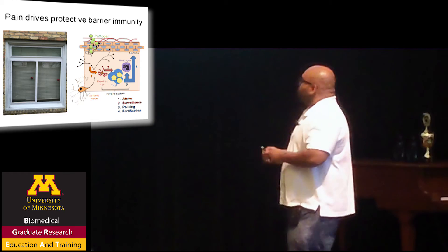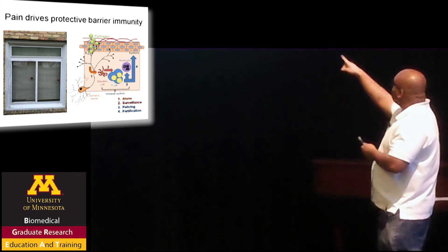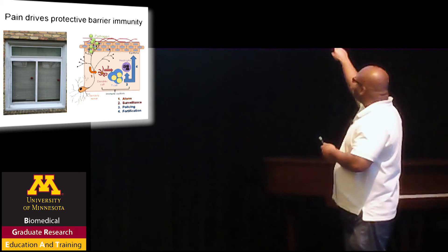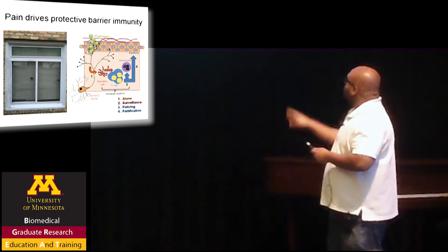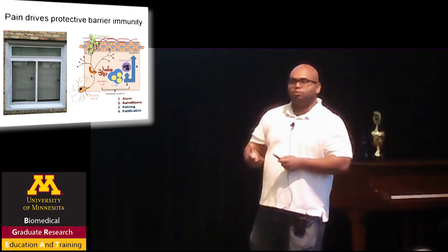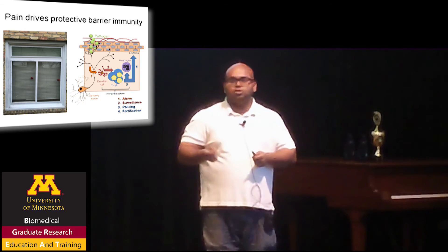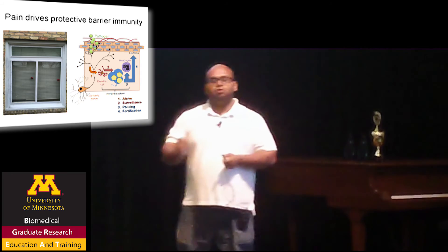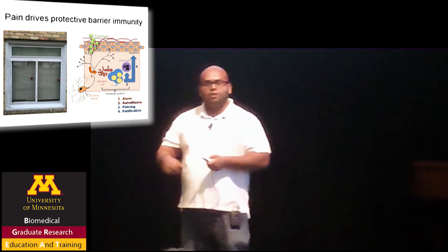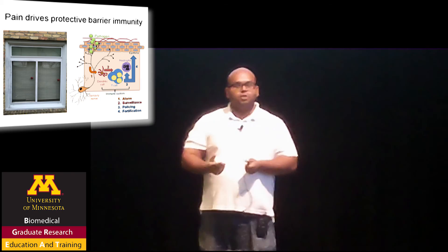We did this study in mice and showed that if you cut off that nerve, or any of the immune cells, or disrupt the pathway, the mice are unable to resist infections. This is also true in humans, because humans who cannot feel pain or have their alarms turned off seem to get recurrent skin infections.